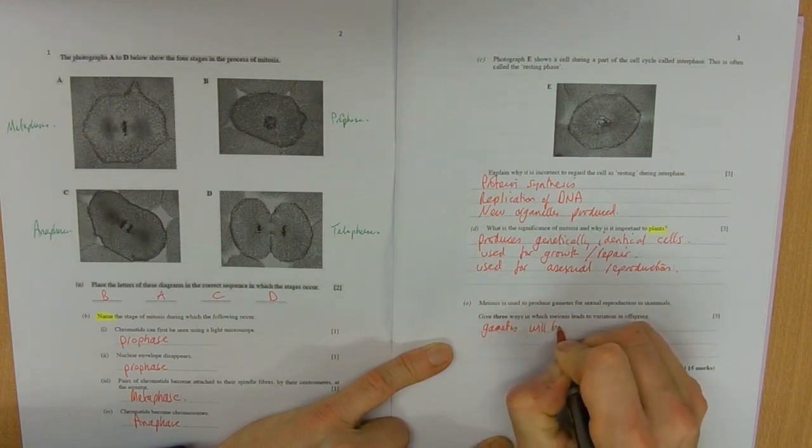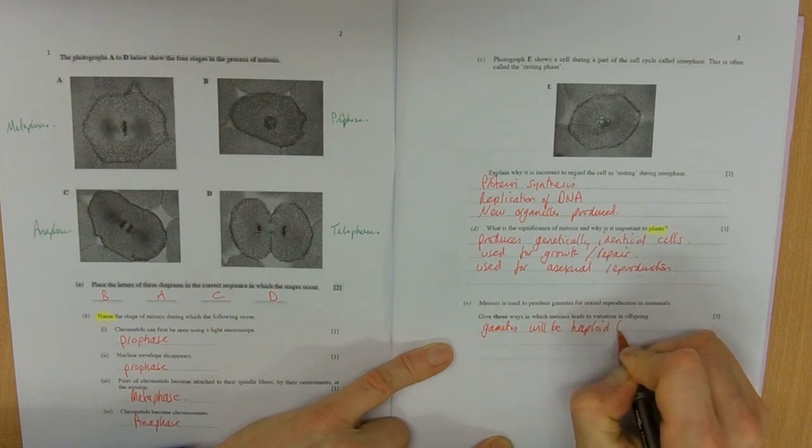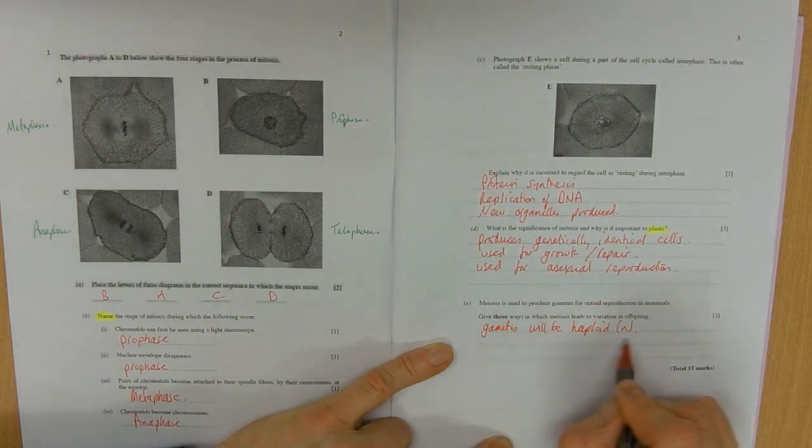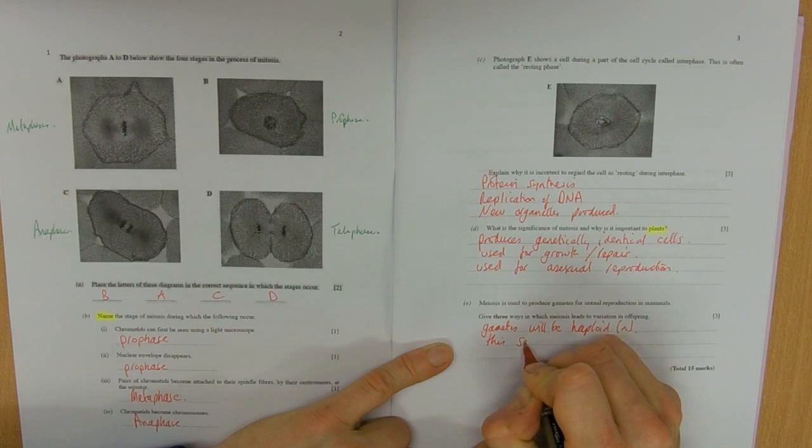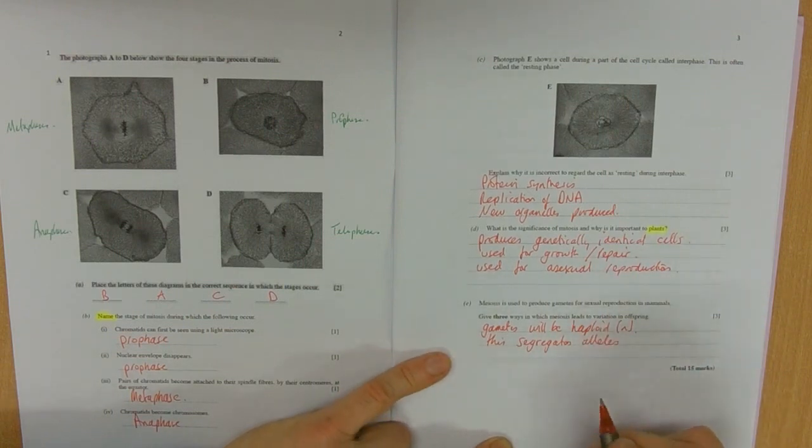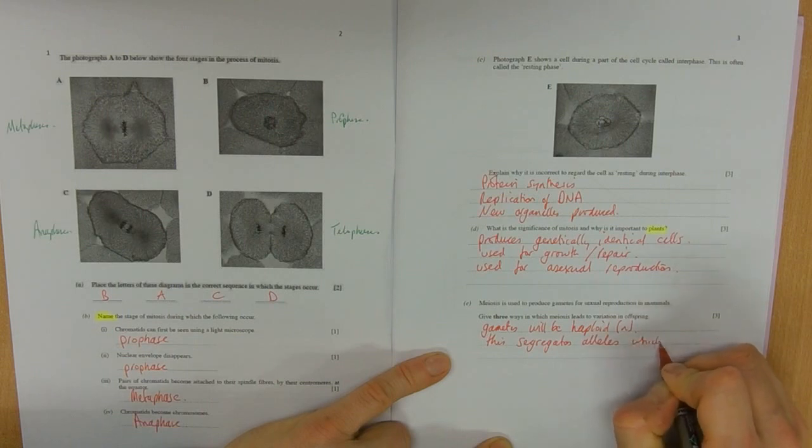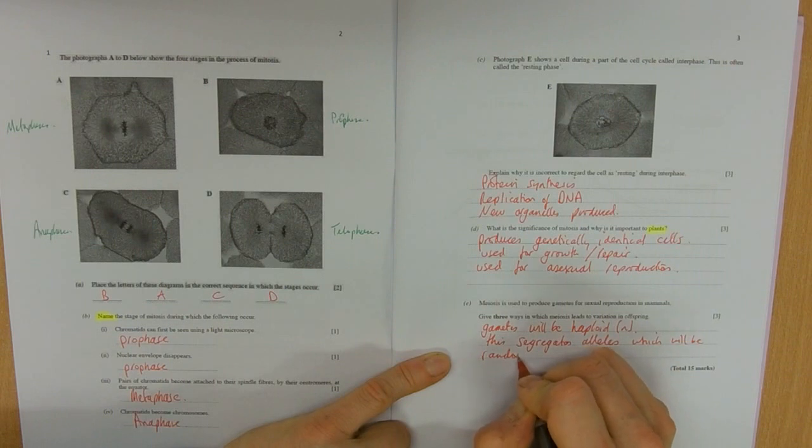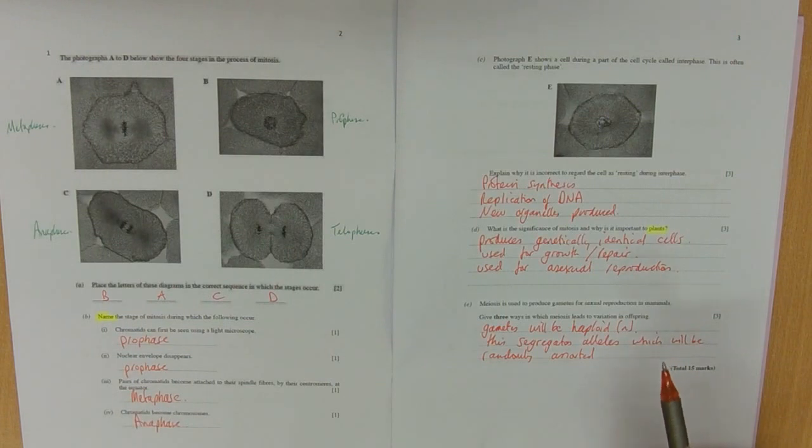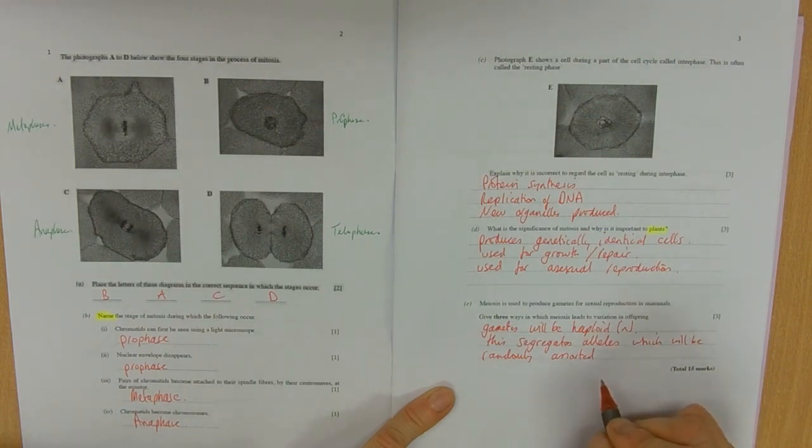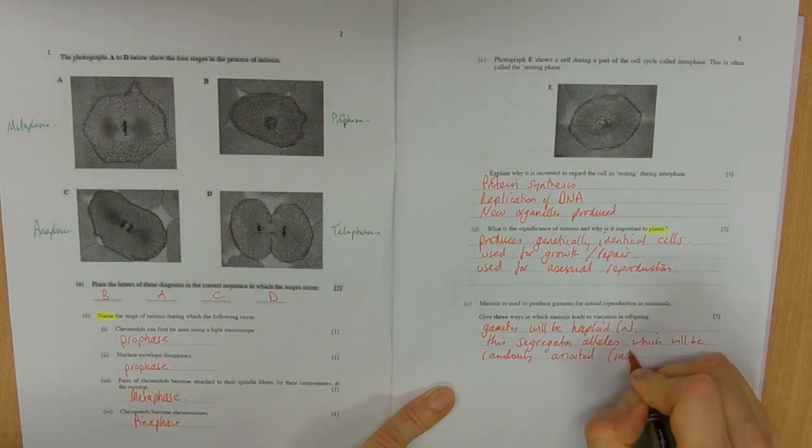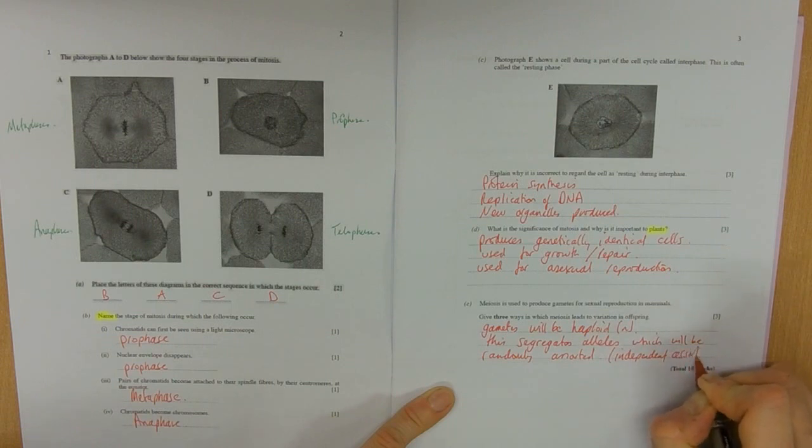We will mention in here as well that we're getting gametes with a haploid number, and that allows more kind of choice to be made. So gametes will be haploid, and this allows the pair of alleles that an organism has to be separated. So this segregates or separates the alleles, which will be randomly assorted. For example, the homologous pair will get separated in meiosis one, and which one of the gametes gets each allele is completely random. So that's independent assortment.